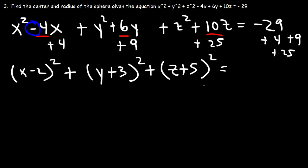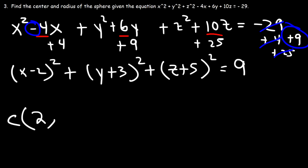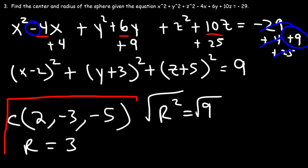Let's add these numbers on the right side. We have plus 4 and plus 25, which is 29. And 29 and negative 29 cancel out to 0, leaving us with 9. So now we can write the center: h is positive 2, k is negative 3 — the opposite of positive 3 — and l is negative 5. So we have the center 2, negative 3, negative 5. r squared is 9, so taking the square root of both sides, r is 3.